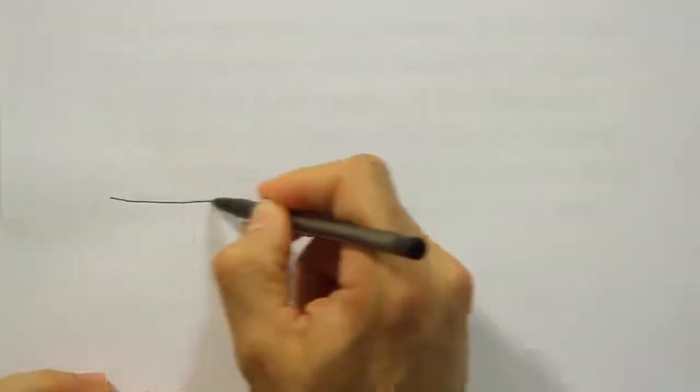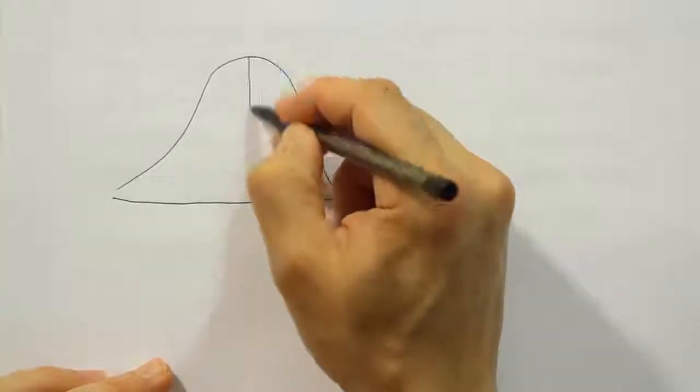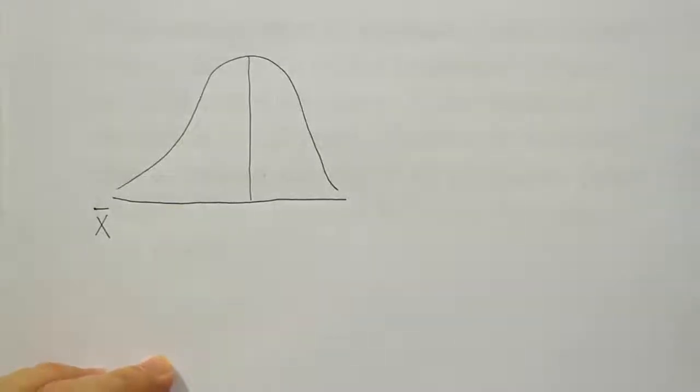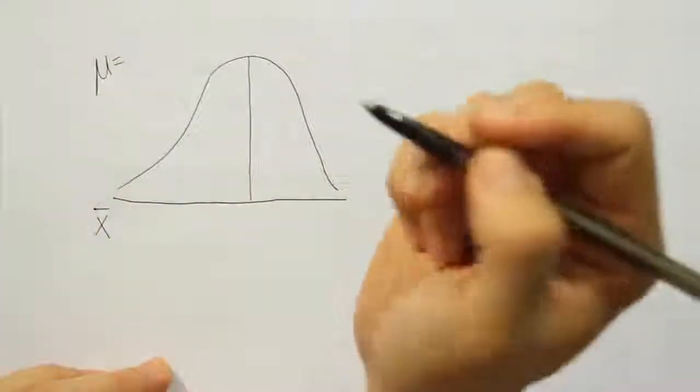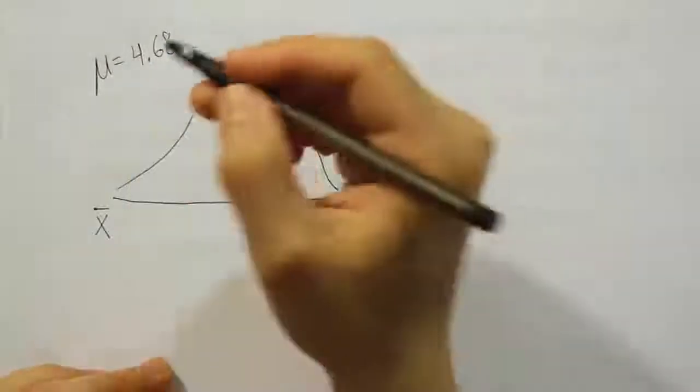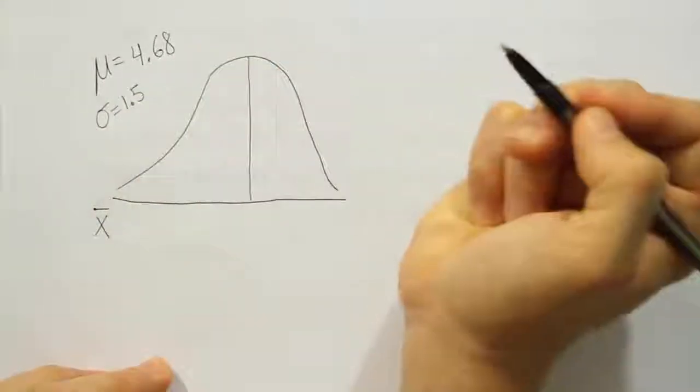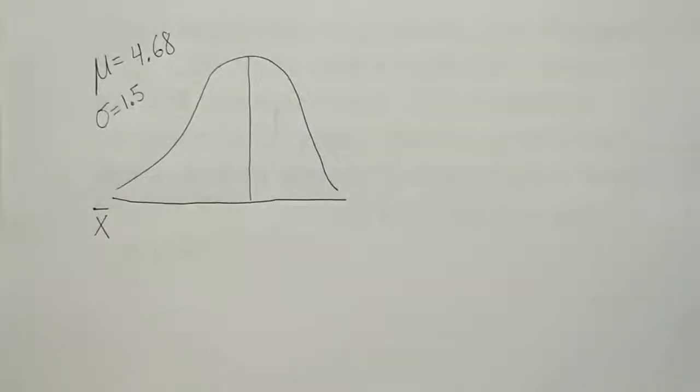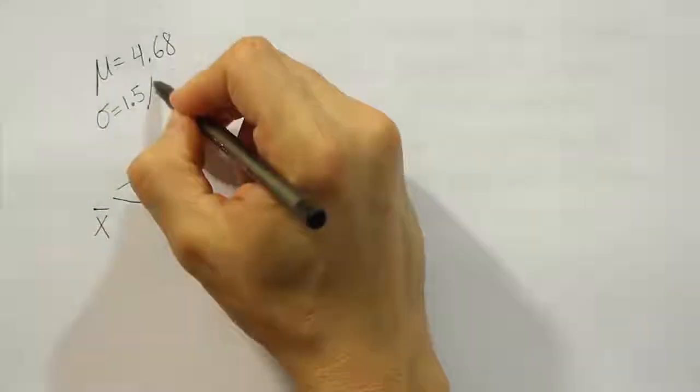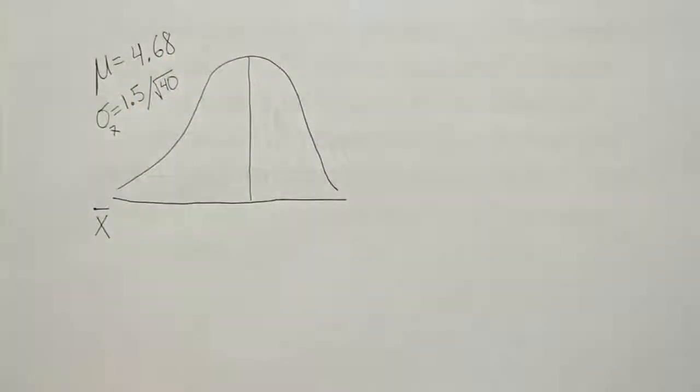Here's my bell curve, and I'm going to label an axis down here. I'm going to call this axis x bar because we're going to be dealing with x bar. They tell us in the problem that the mean time to complete the degree is 4.68 years, and the standard deviation is normally 1.5 years. But that's a standard deviation for an individual student who completes the program. What we're looking for is a standard deviation for a group of 40 students. So we're going to divide that by the square root of 40. That's how we get the standard deviation for x bar, which is based on a sample of 40 students.